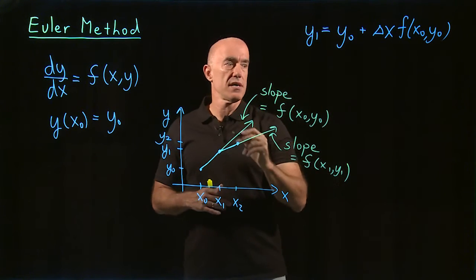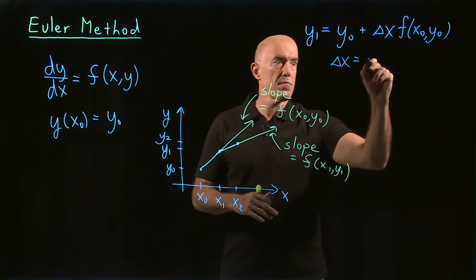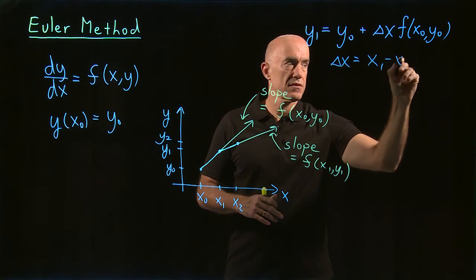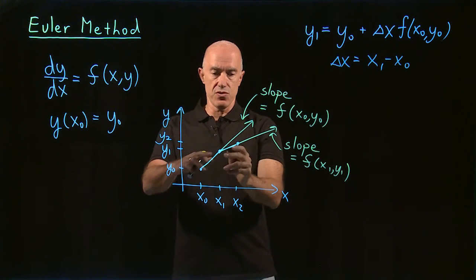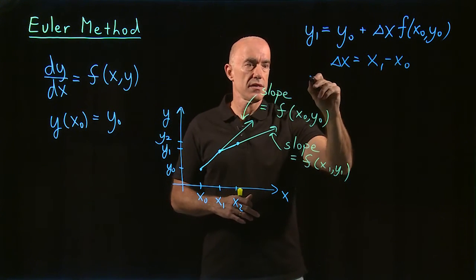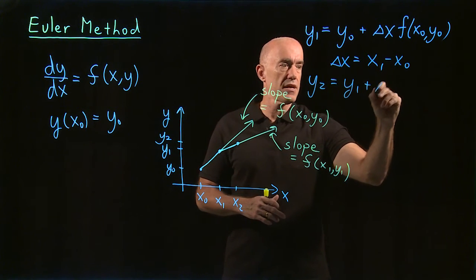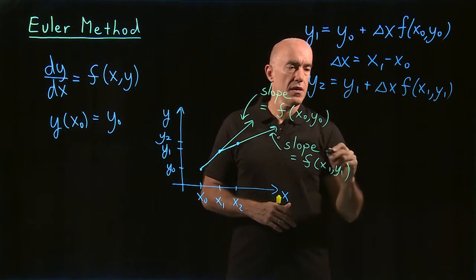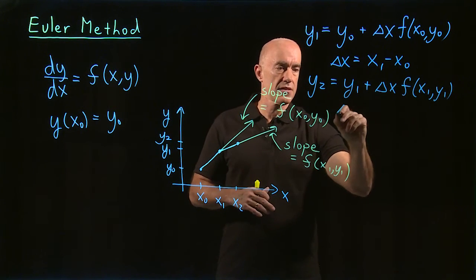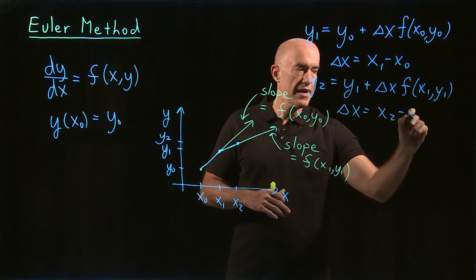Here delta x is just x1 minus x naught. And then to get to y2, it's similar. So y2 equals y1 plus delta x times f of x1, y1. And here delta x is x2 minus x1.